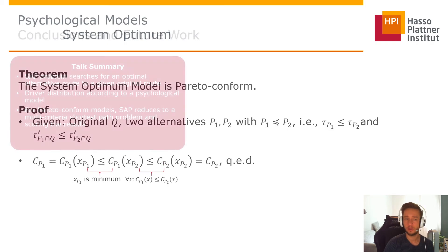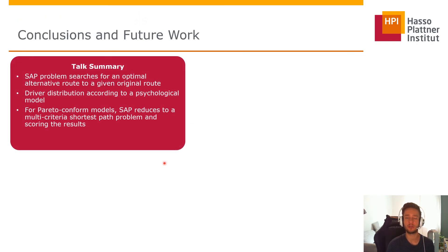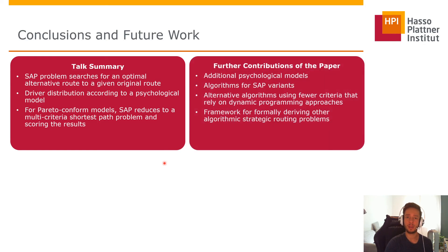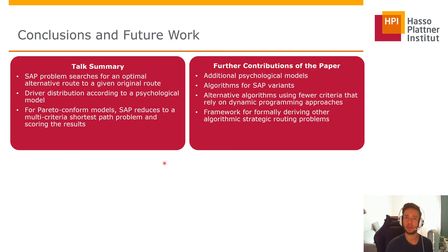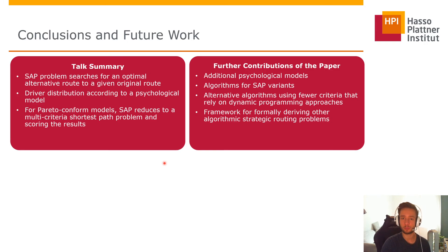To conclude, the SAP problem searches for the optimal alternative route to a given original route according to a psychological model. For Pareto conform models this reduces to solving a multi-criteria shortest path problem and then scoring the results. The paper further considers additional psychological models like user equilibrium or linear dependency, provides more SAP problem variants regarding disjointedness, and offers algorithms using fewer criteria with dynamic programming approaches. The framework is intended to push forward research in strategic routing.